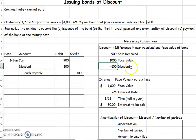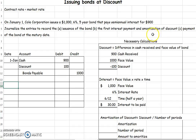The next thing is to journalize the first interest payment — six months later we have an interest payment and the amortization of our discount. Amortization is very much like depreciation; I like to say it 'whittles down.' We start with a discount of $100 total, and we want to get rid of it over the life of the bond. This is called straight-line amortization.